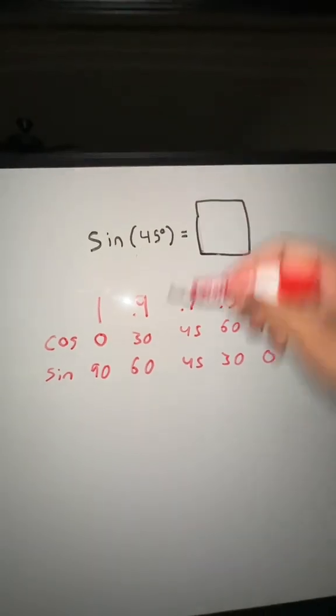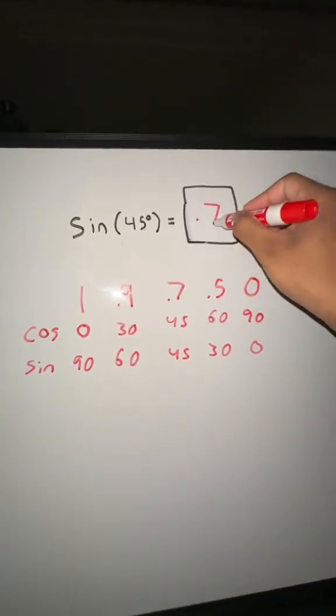So to answer this right here, sine of 45, if you look over here, it's going to be about 0.7. And you can use this in your calculations.